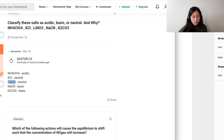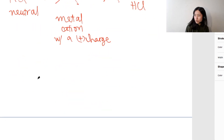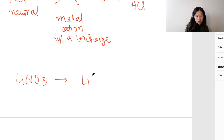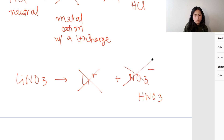LiNO3 is the next one. Li+ and NO3-. HNO3 is nitric acid, and lithium is a metal cation with a positive charge. Therefore the two of them don't participate in hydrolysis, making this neutral, because nitric acid is also a strong acid.